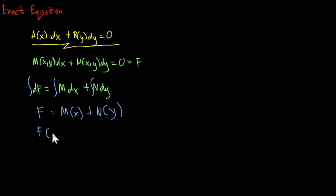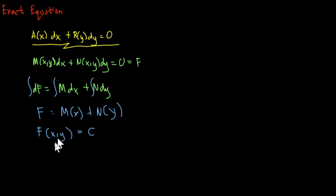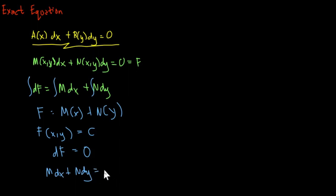We can say that f as a function of x and y equals a constant. Going back, if we get the derivative of that constant, then df equals zero, because the derivative of a constant is zero. So from this, we can say that M dx plus N dy is equal to zero, and this is now the general form of our exact differential equation.